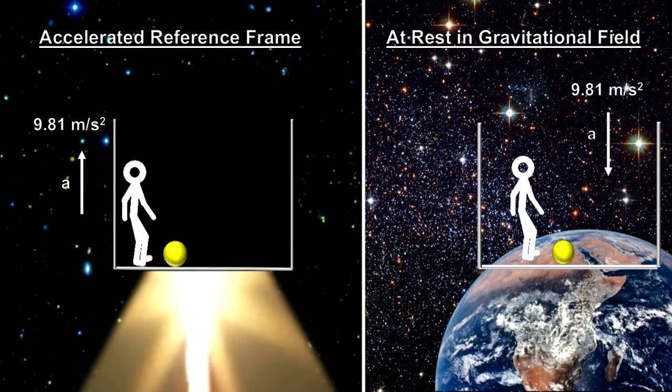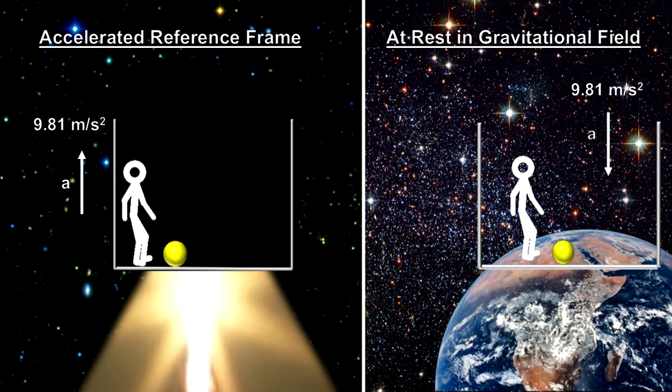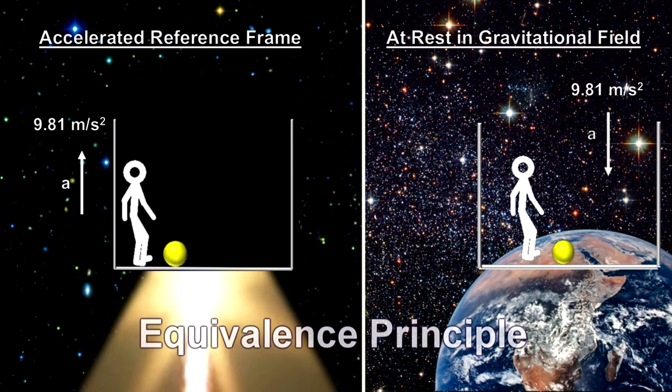As far as the laws of physics are concerned, being accelerated and sitting still in a uniform gravitational field are equivalent. This is Einstein's general relativity equivalence principle.